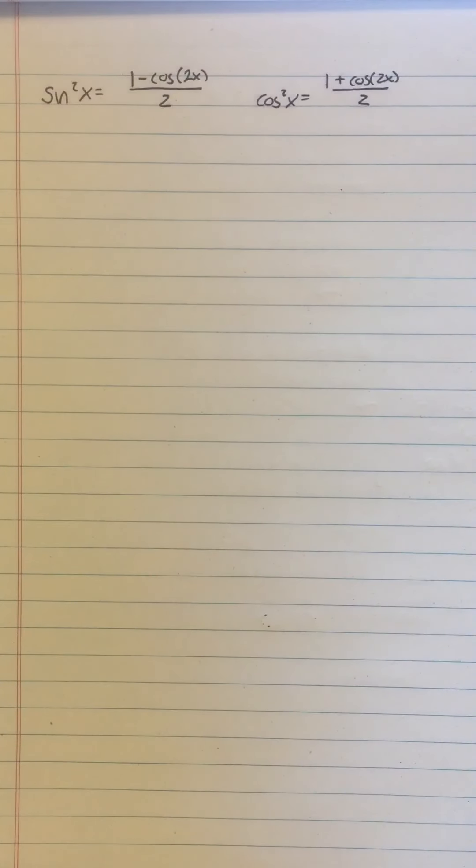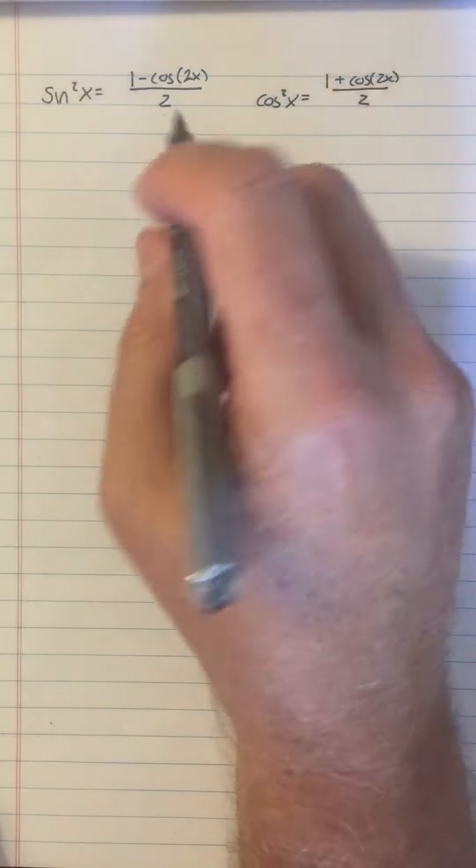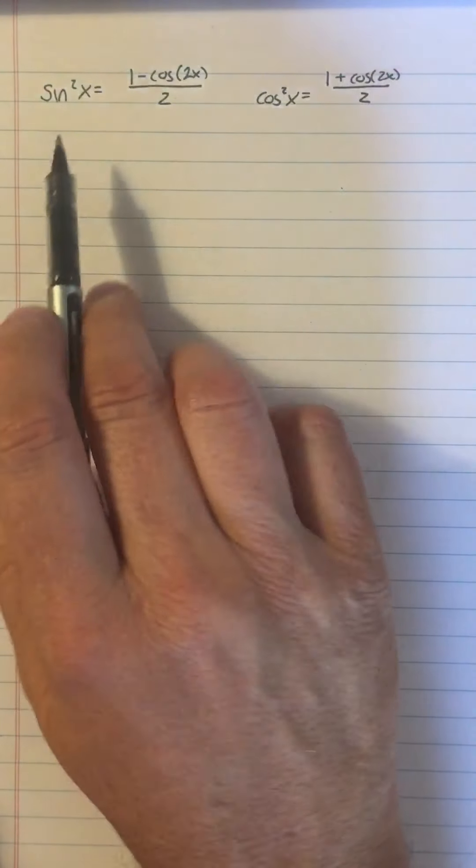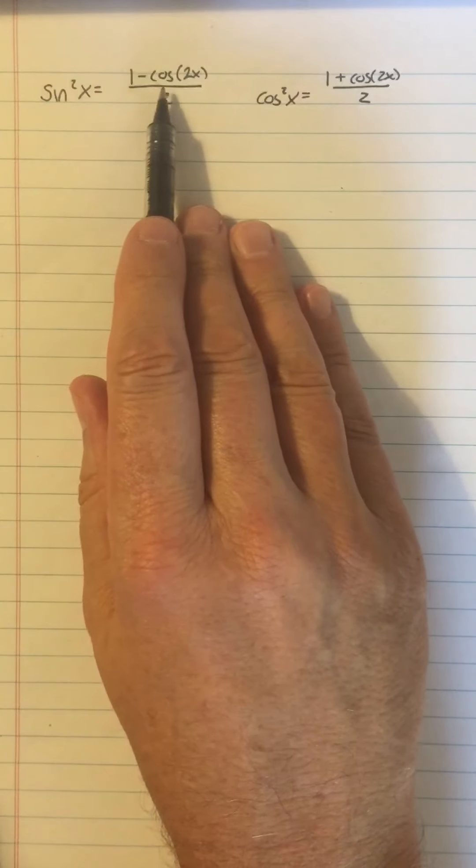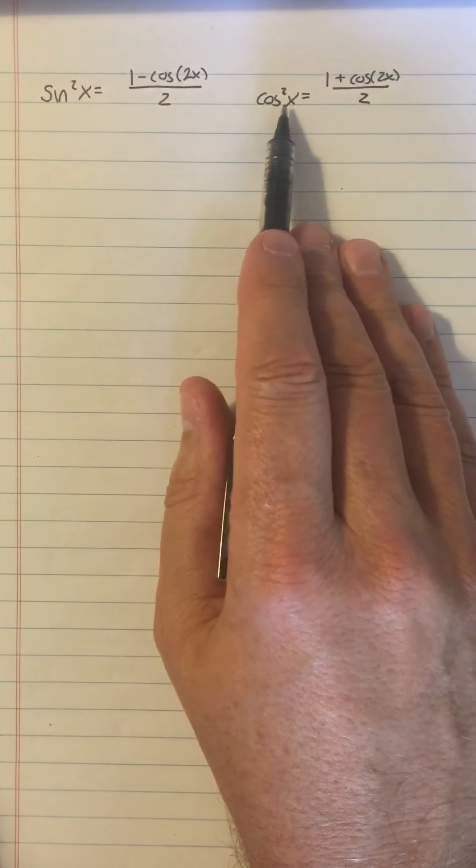So here are two nifty formulas that we just came up with to solve the integral that we're so interested in, the integral of cosine squared x. But before we do that, I want to show you something cool. Because these equations are really quite remarkable if you think about them, that sine squared is equal to 1 minus cosine of 2x over 2, and cosine squared is equal to 1 plus cosine 2x over 2.